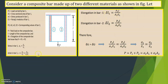Elongation of bar 1: delta L1 is equal to P1 L divided by A1 E1. Elongation of bar 2: delta L2 is equal to P2 L divided by A2 E2. According to the rule that deformations are equal, delta L1 equals delta L2, so P1 L divided by A1 E1 equals P2 L divided by A2 E2.